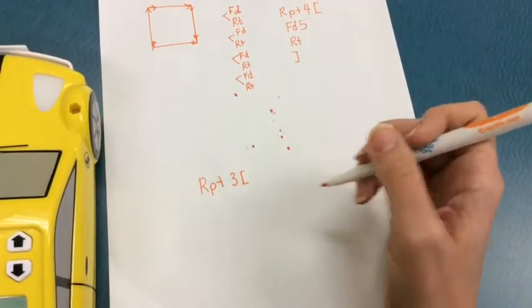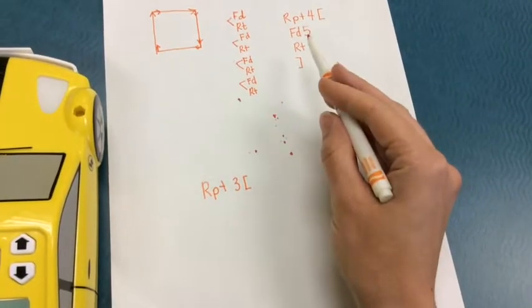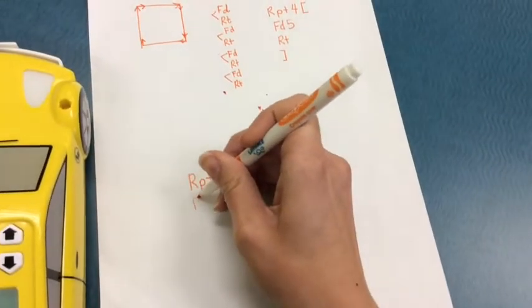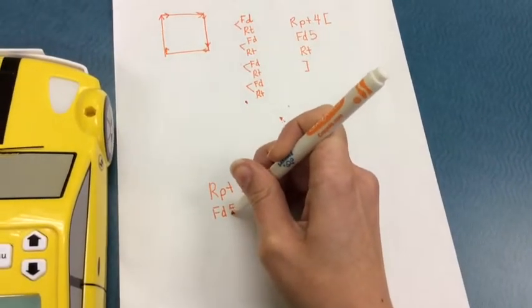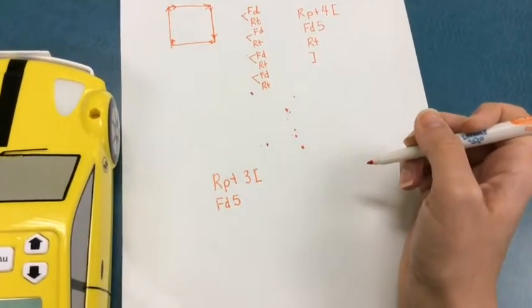We're going to use the same beginning directions, forward, so press forward five. This will be a small triangle.